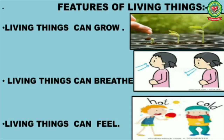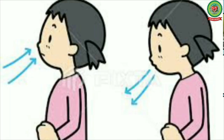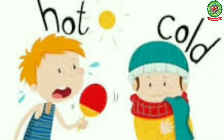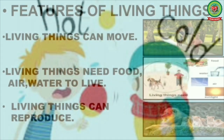Our next feature is living things can breathe. As we all are living beings, we breathe in oxygen and we breathe out carbon dioxide. So living things can breathe. The next feature is living things can feel. We can feel that a thing is hot, cold, sharp, or smooth. So this shows living things can feel.